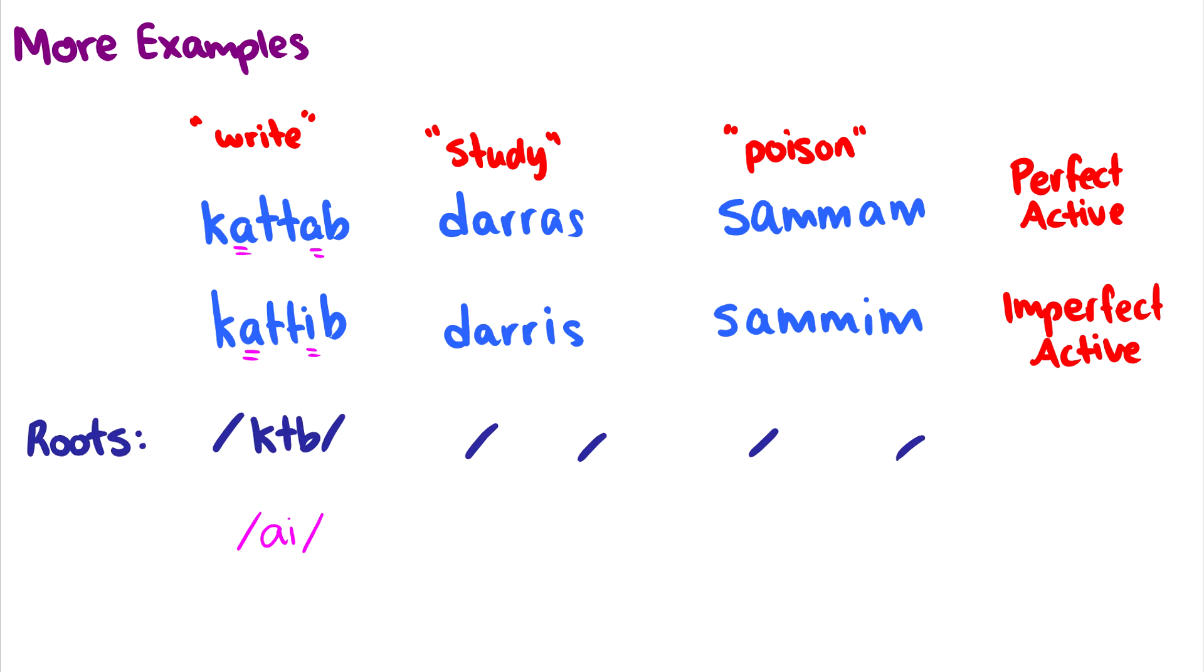Same with daros and daris. Again, we see the root here is just drs. And then with the perfect active, we have the a shoved in between the d and the r and the r and the s. And then with the imperfect active, we still have that a and e being distributed. Now what about poison? Sammam and sammim. Well, in this case, really, we just have two consonants forming our root. And for some reason, when we only have two consonants, that last consonant in the word is also taking on that mm. So it's not entirely clear what we can do here.